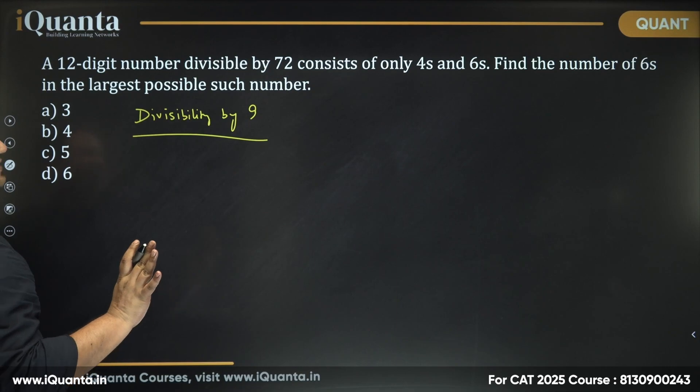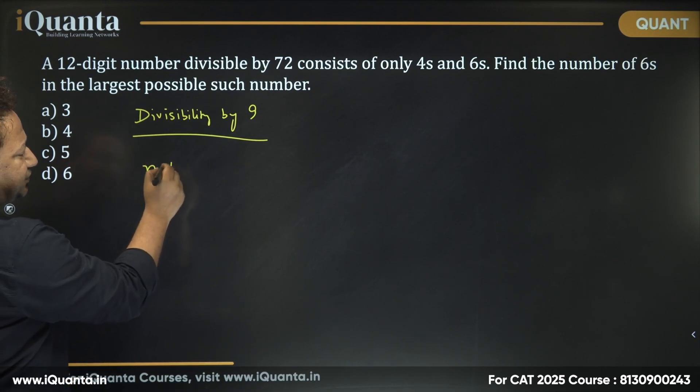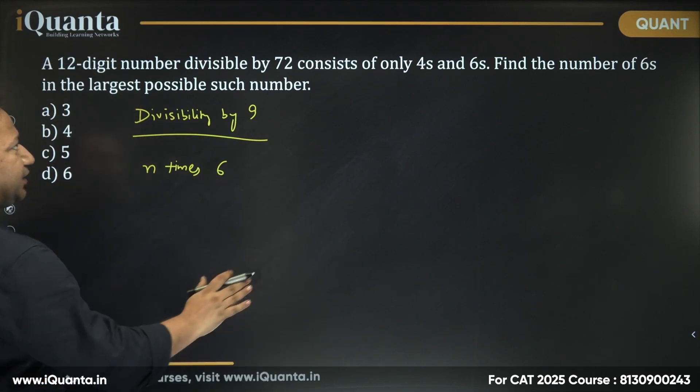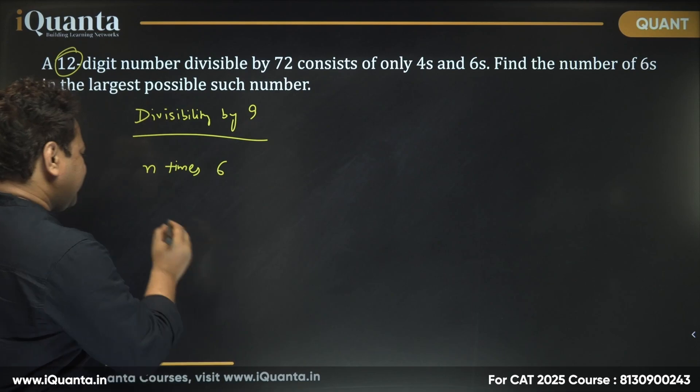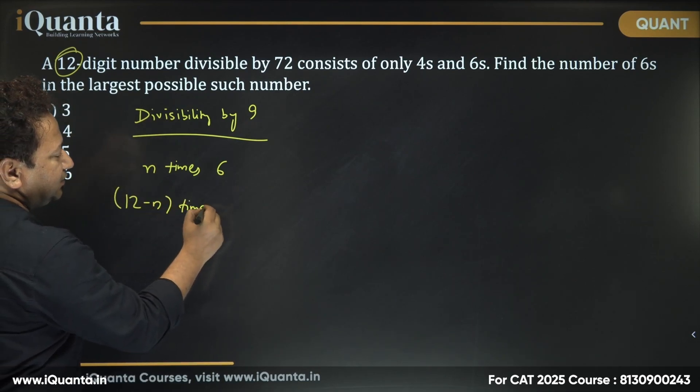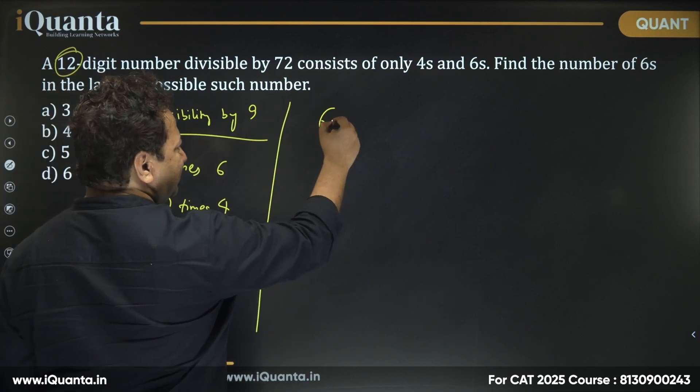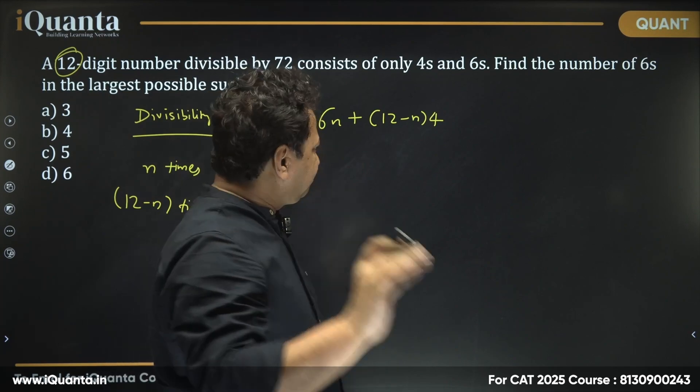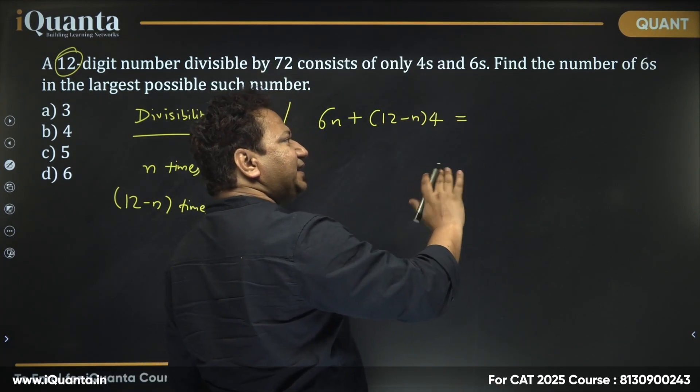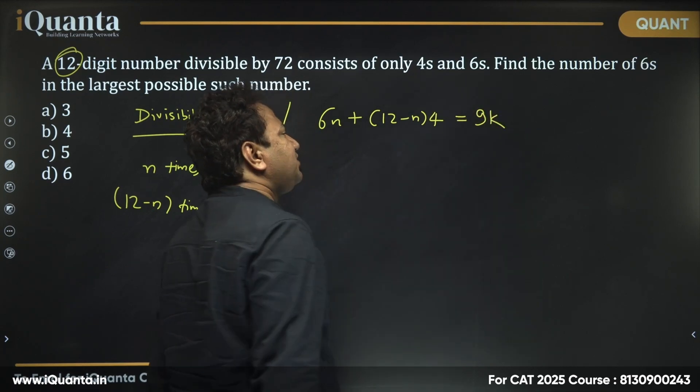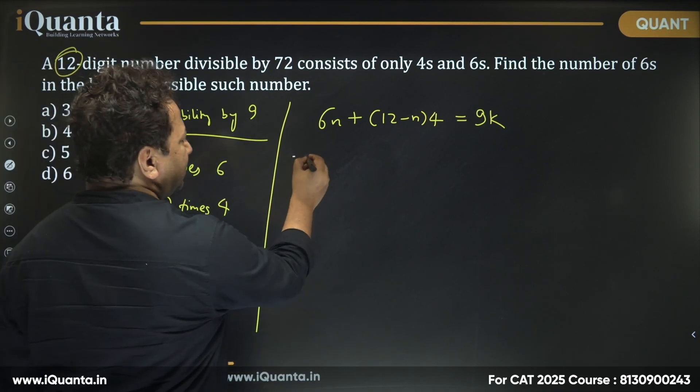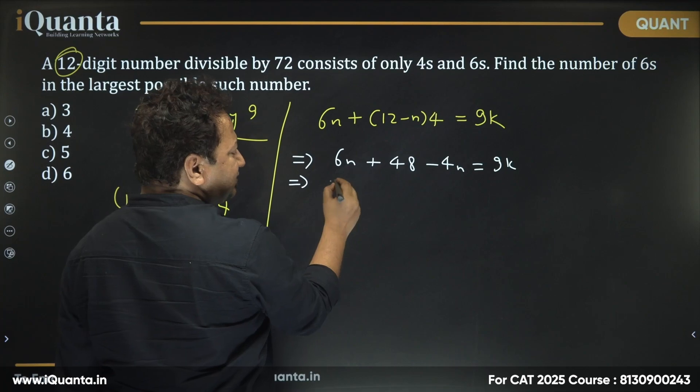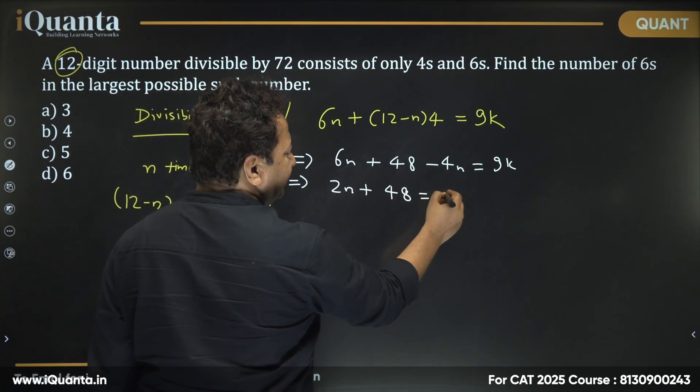So let's say I have n times 6 and the remaining number of times 4. So we have 12 digit numbers. If n digits are 6, then remaining 12 minus n digits will be 4. And the sum of it will be 6n plus 12 minus n times 4. And this guy should be a multiple of 9. So a multiple of 9 can be written as 9 times something. Let that something be k. So 9k.